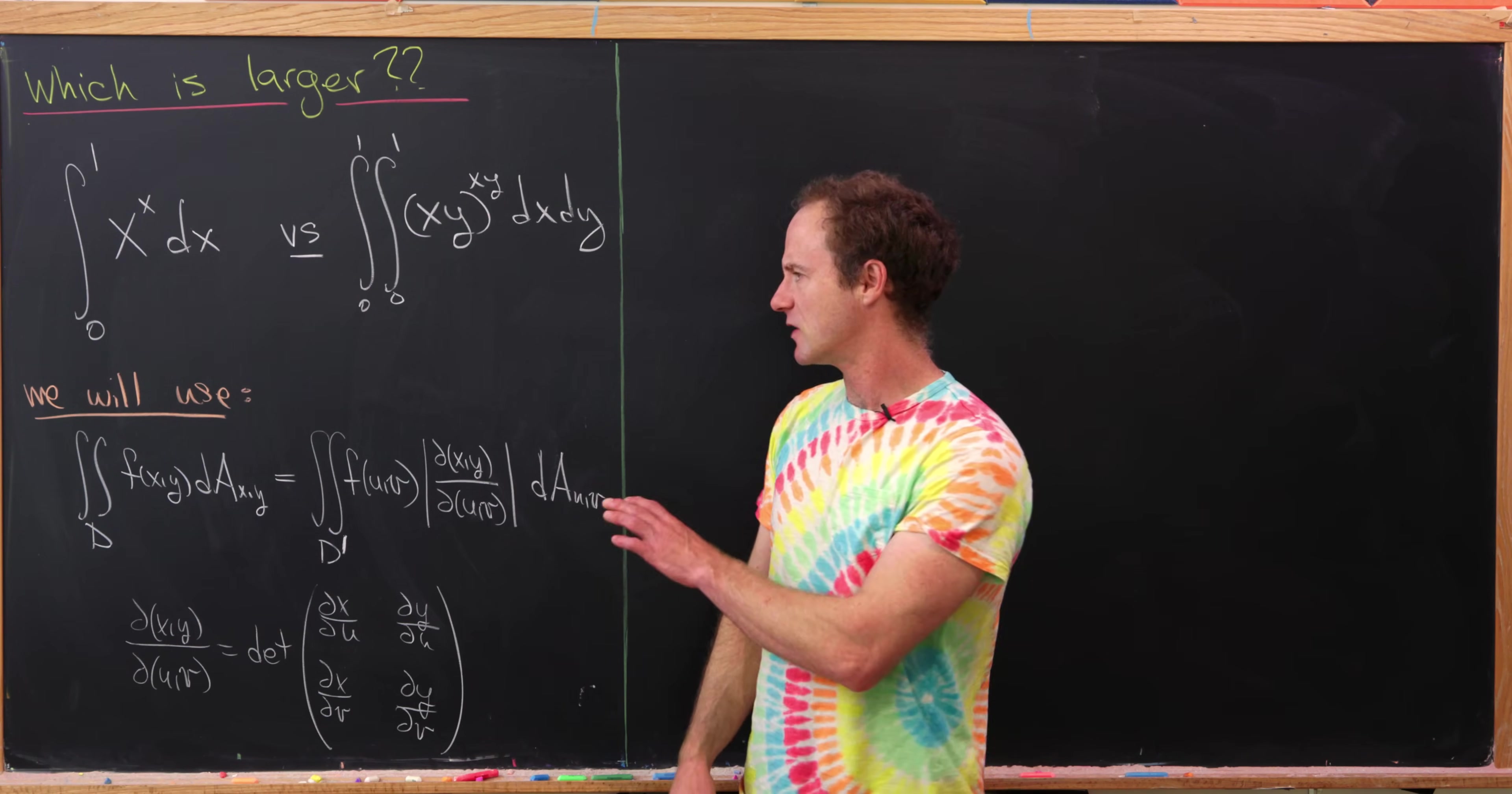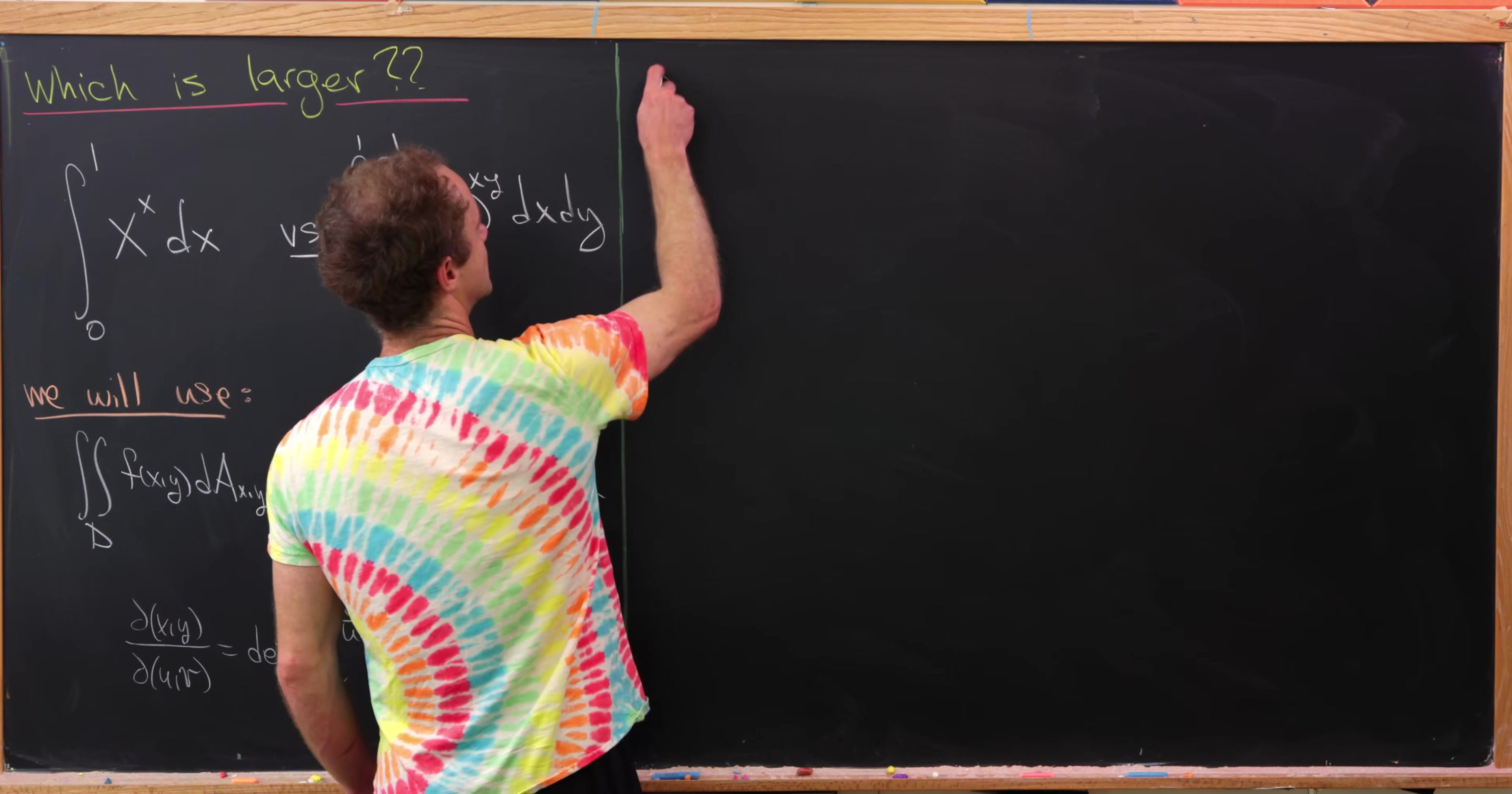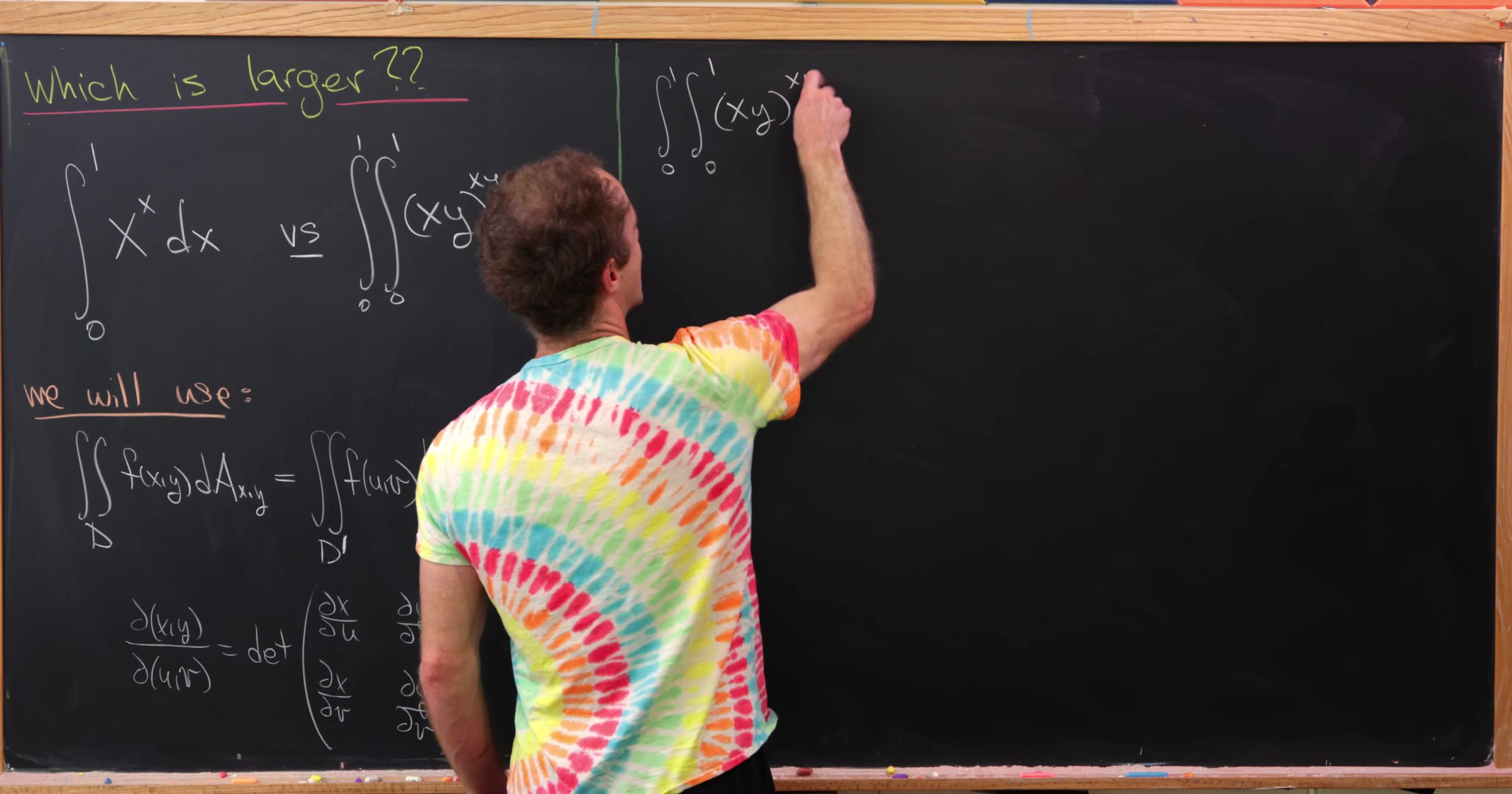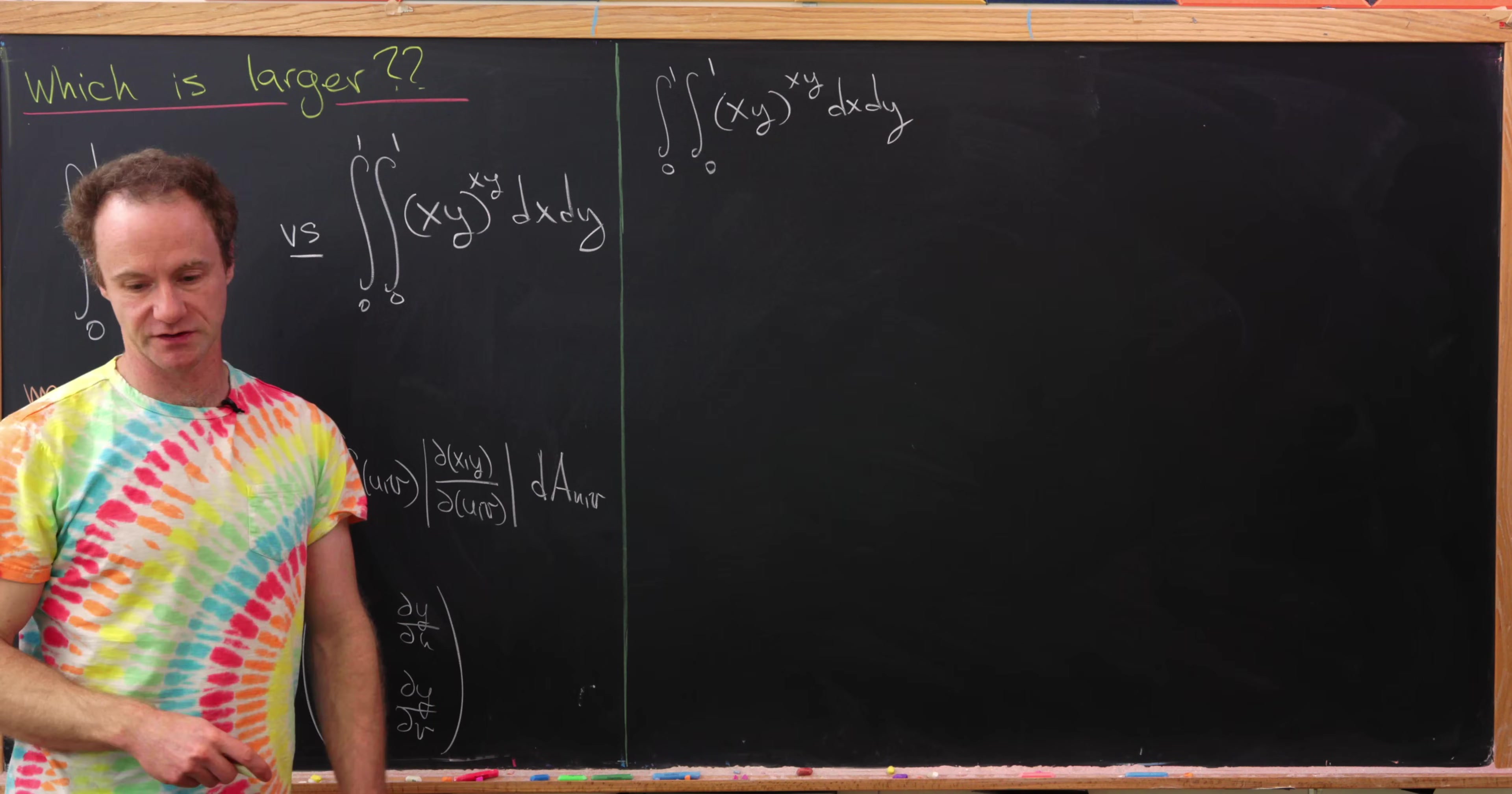So now that we've got that recalled, let's get started. We're going to start with this double integral. We've got the integral from 0 to 1 and the integral from 0 to 1 of x times y to the power x times y, and then dx dy as an iterated integral.